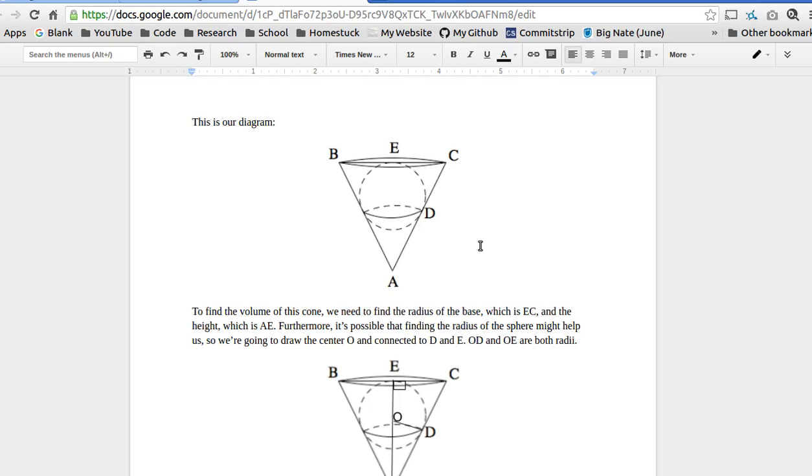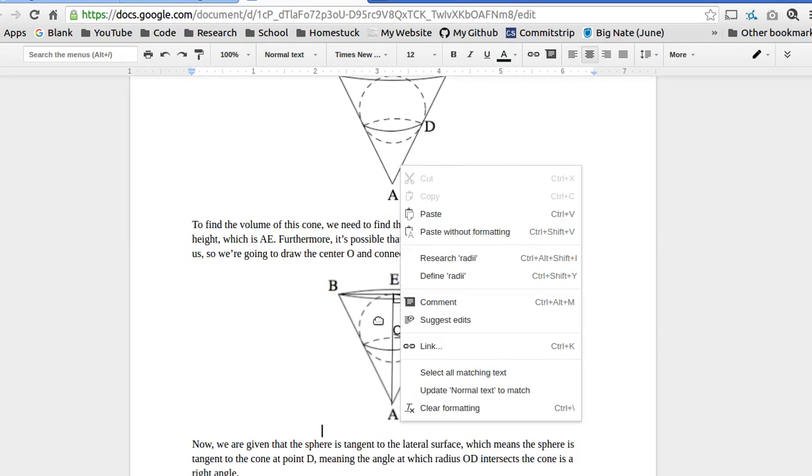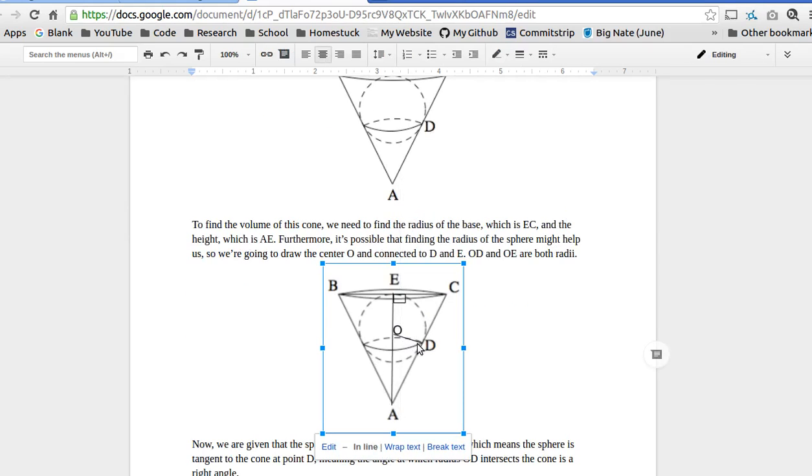And we also have this sphere. Usually when you have a sphere, it's helpful to draw the radii. So D is on the point of the sphere since it's a point of tangency. So we're going to say the center is O, right here. And we're going to draw the radius OD.